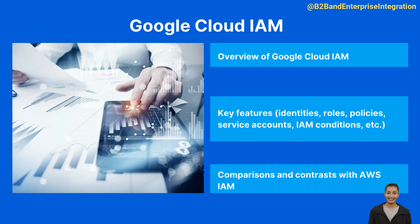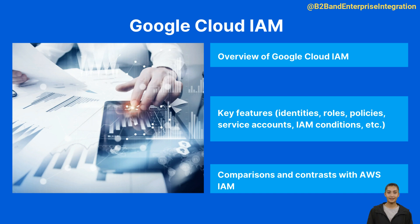1. Identities — the 'who' part of IAM. An identity can be a Google account for end users, a service account for apps and virtual machines, a Google group, a Google Workspace domain, or a Cloud Identity domain. 2. Roles: a role is a collection of permissions that determine what operations are allowed on a resource. Predefined roles are provided by Google, or you can create custom roles. 3. Resources — the 'what' part of IAM. A resource can be a Google Cloud service like a Compute Engine VM, a Cloud Storage bucket, or a Pub/Sub topic. 4. Policies: policies bind identities to roles. A policy is a JSON object containing bindings, and each binding binds one or more identities to one or more roles.